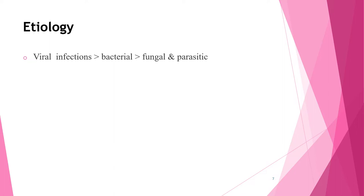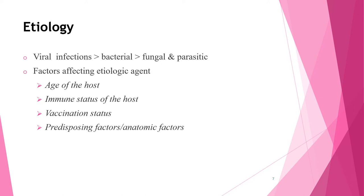Regarding etiologic agents of meningitis in children, viral infections are more common than bacterial CNS infections, and bacterial infections are more common than fungal or endoparasitic ones. Factors affecting the etiologic agent include the age and immune status of the host, vaccination status, predisposing factors, and anatomic factors.